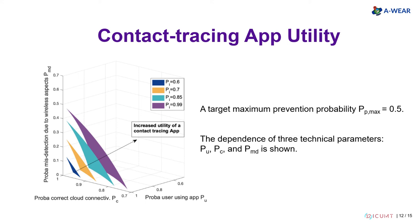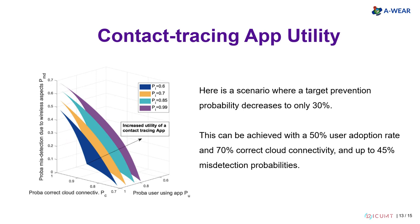A smaller surface illustrates the fact that the target prevention probability can be achieved with stricter conditions on the probabilities, while a larger surface shows a better prevention probability for a wider combination of connectivity errors, user adoptions, and misdetections due to wireless signal variability. For example, a target prevention probability of 30% can be achieved with a 50% user adoption rate, 70% correct cloud connectivity, and up to 45% misdetection probability.